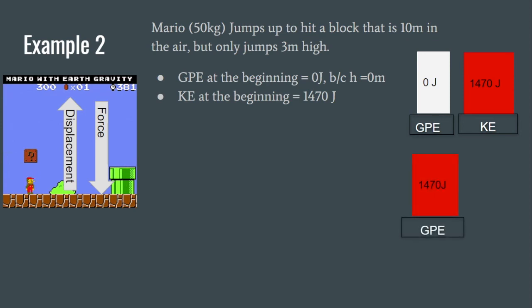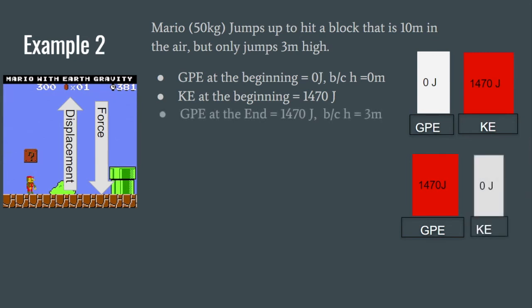At the end — which we define as the apex, Mario's maximum height — GPE is 1470 joules because height is 3 meters, so all kinetic energy has been transferred into GPE. KE at the end is zero joules because at the apex Mario is not moving. The initial KE of 1470 joules was determined by solving for GPE at the apex first.